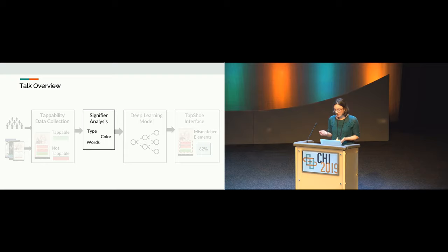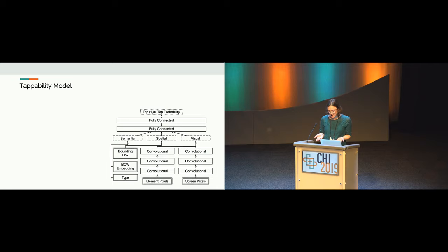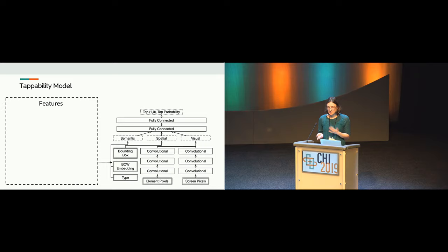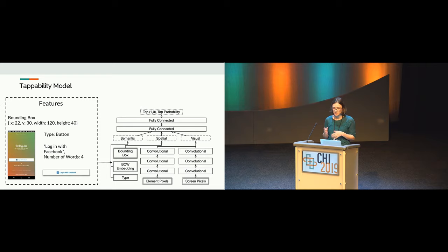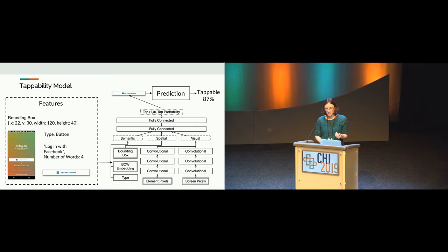Next, I'll describe how we used these signifiers to build a deep learning model to predict interface element tappability. Based on the signifiers we found, we built a convolutional neural network model which processes visual features and a semantic embedding to model element types and word content. Features include the element's bounding box on the screen — location and size — the element's semantic type such as button or text view, the words an element contains and number of words, and screenshot data including the pixels of the element itself and the surrounding screen context to capture information signifying tappability.